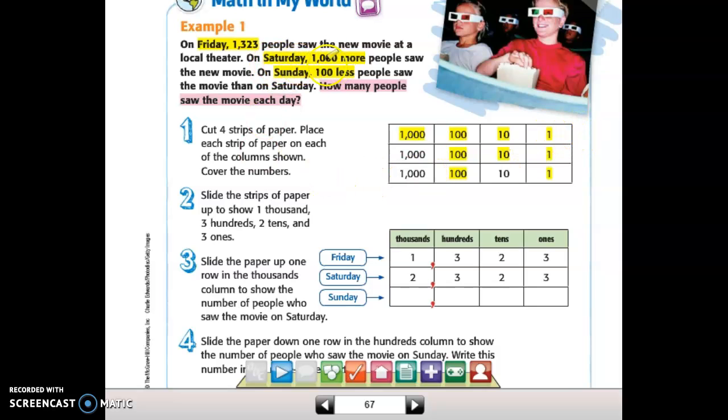So there's our original number, 1,323. Now in order to show these changes, we're going to show some different things on this place value chart. Slide the paper up one row in the thousands column to show the number of people who saw the movie on Saturday. So we're just going to highlight one more row, because it says on Saturday 1,000 more people saw.